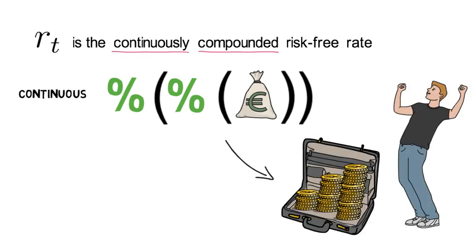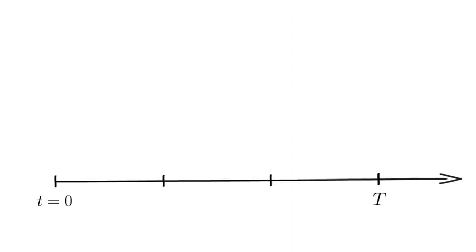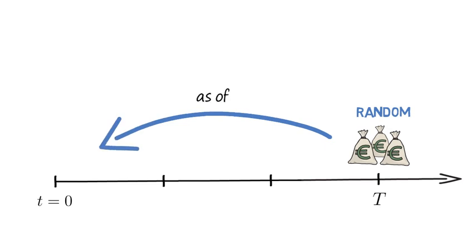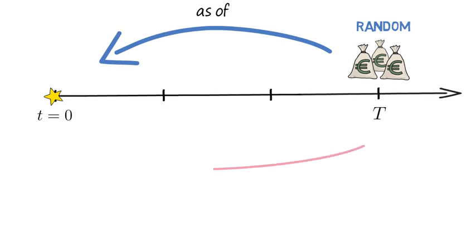If you were to say you would like to continuously roll over your short-term savings over a longer horizon capital T, then your final payout within that period would be random as of today, similarly t equals zero. We denote your cumulative time T return from a continuous rollover into the savings account as capital R with an index T.